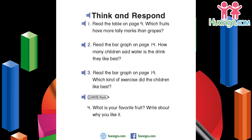Think and respond. Question 1: Read the table on page 9 — which fruits have more tally marks than grapes? Question 2: Read the bar graph on page 14 — how many children said water is the drink they like best? Question 3: Read the bar graph on page 19 — which kind of exercise did the children like best? Write math. Question 4: What is your favorite fruit? Write about why you like it.